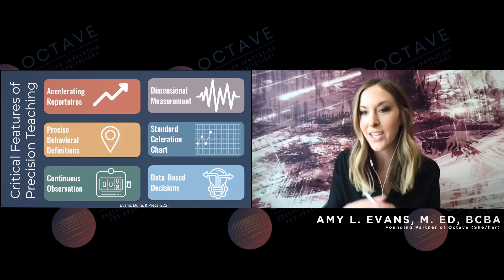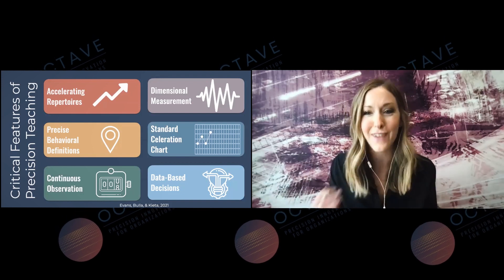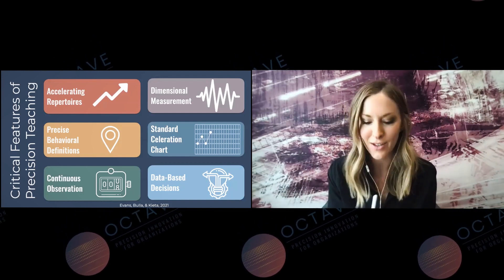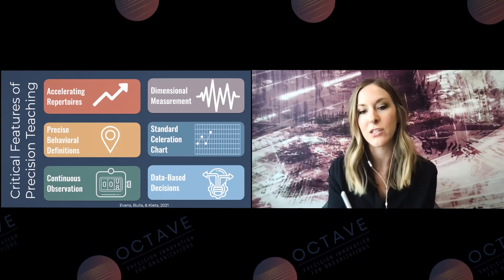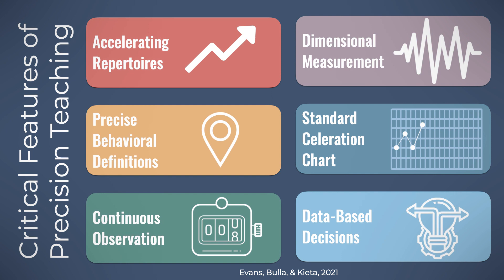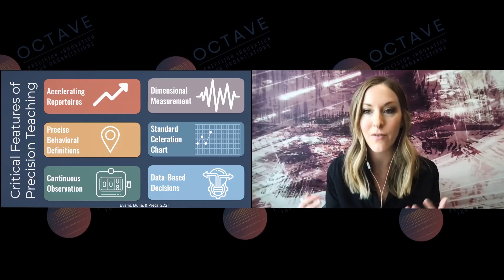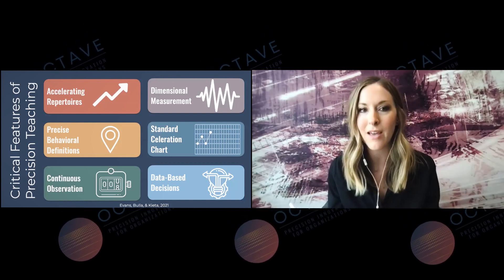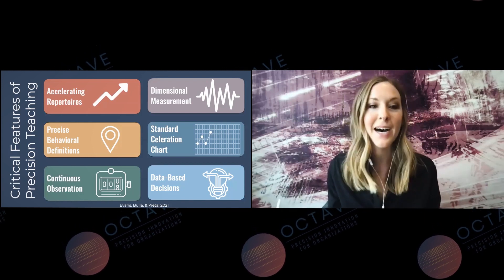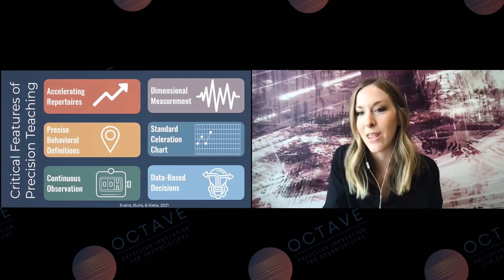We shared a definition and a list of critical and variable features as fast as I could talk last time. So let me talk you through what we've got. We came up with a set of specific critical features — myself, Drew Bulla, and Andrew Keita — and the six critical features of precision teaching, as we see it, are: accelerating repertoires, meaning that we're focusing on actually accelerating some sort of behavior. Cases of using precision teaching or the standard celeration chart only to decelerate behavior, or to look at things that aren't behavior, don't count as precision teaching, at least in the way that we set this up.